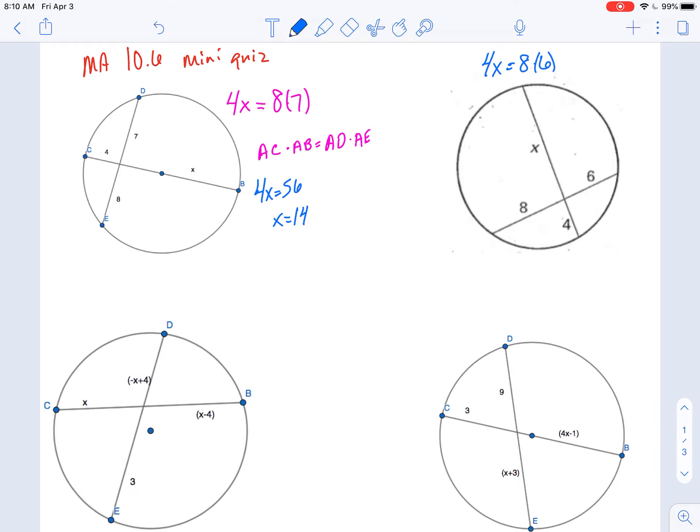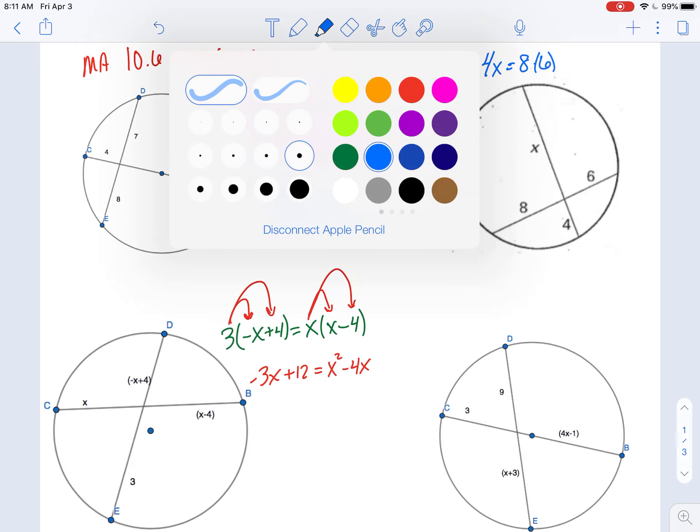We're going to keep taking the same approach, but sometimes we'll have binomials here. So still going to do the same approach, multiply the two parts of the same chord. So I'll say 3 times negative x plus 4 equals x times x minus 4. And I'll have to distribute to both parts. So like we saw yesterday when I made that first mistake, gotta be very careful. So negative 3x plus 12 equals x squared minus 4x.